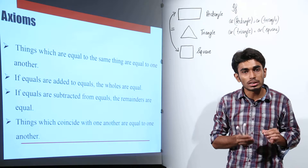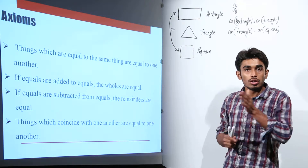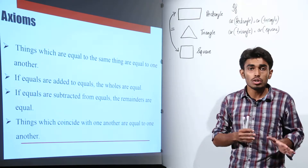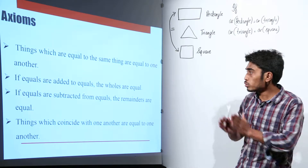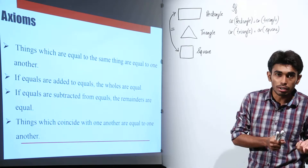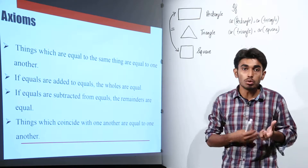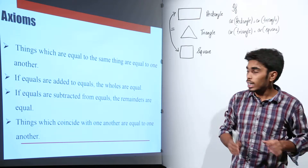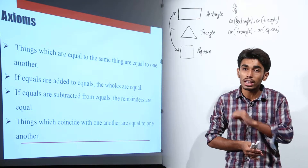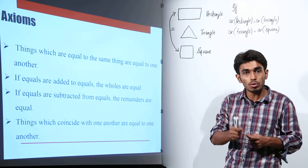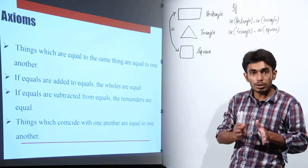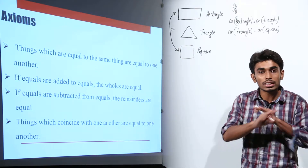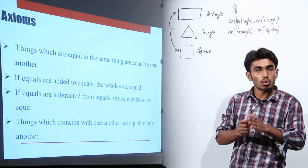The axioms and postulates — and the whole chapter — you will see this is nothing but very basic concepts. Nothing new is going to be studied in this chapter, but we have to study it the way it was developed by Euclid. We will try to do questions knowing only this information and nothing else. The basic problem students face is that the questions are really simple but they don't know how to start writing. So I recommend: just think that you know only these axioms and postulates, and you will be able to solve the questions very easily.